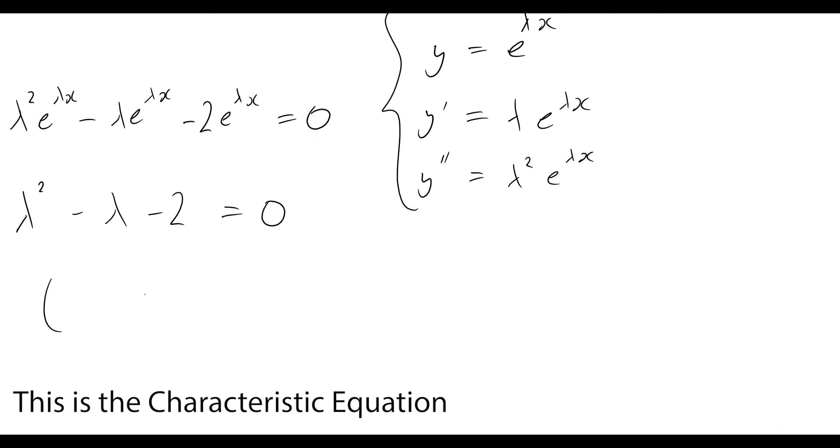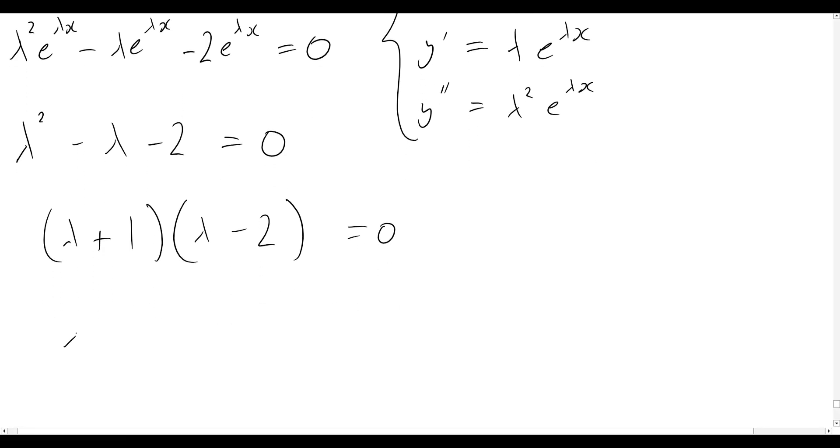And this is just a straightforward quadratic equation. And so when we solve this, let's just quickly factorize this. So we'll end up with lambda plus one and lambda minus two equal to zero. So then we can say, well, therefore, lambda is going to be equal to minus one and positive two.